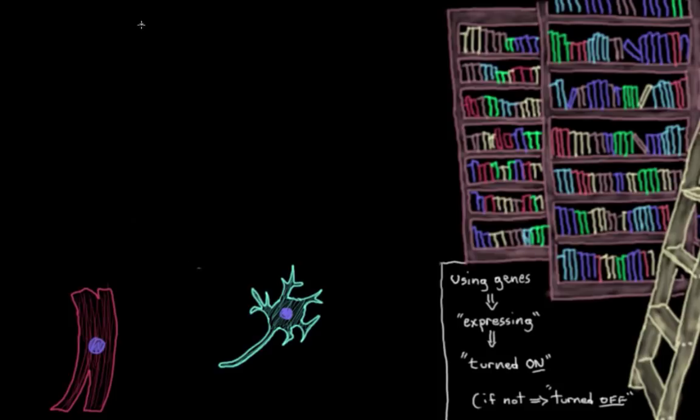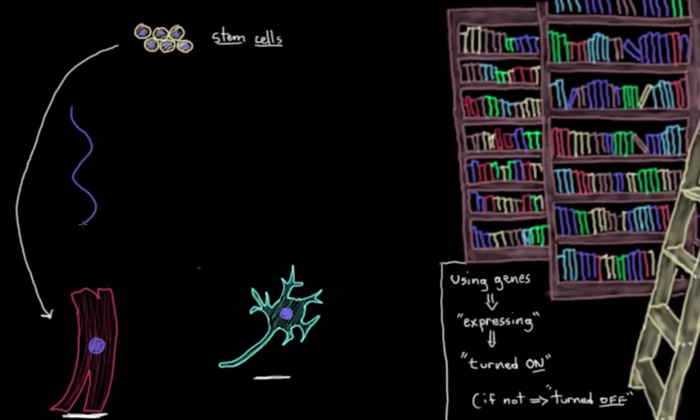So why am I telling you all of this? Well, because in the end, it all relates to how our stem cells all the way up here end up differentiating into our specialized cells down here. So the bottom line is, in order to differentiate, to, for example, specialize into our muscle cell here, this stem cell up here turned on its muscle cell genes.